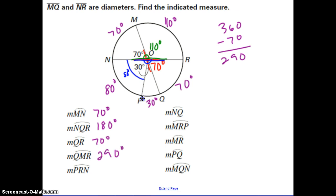And then lastly, P to R to N. So again, same idea, everything in the circle except for this 80 degrees. So that's 360 minus 80 to give us 280.